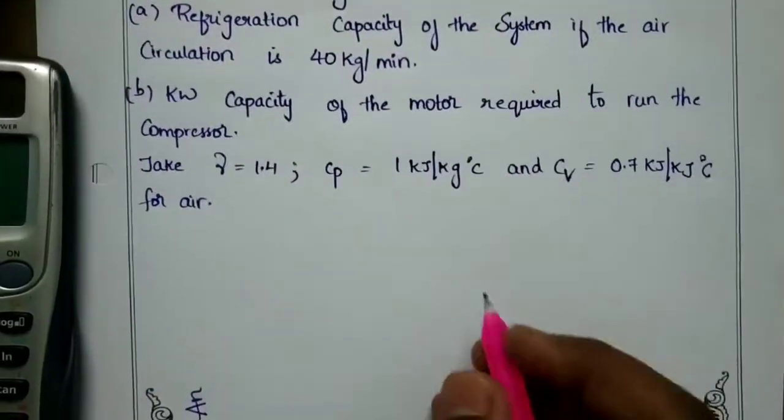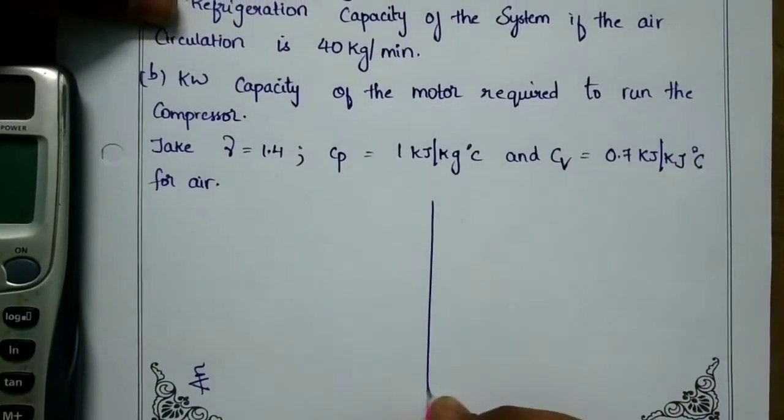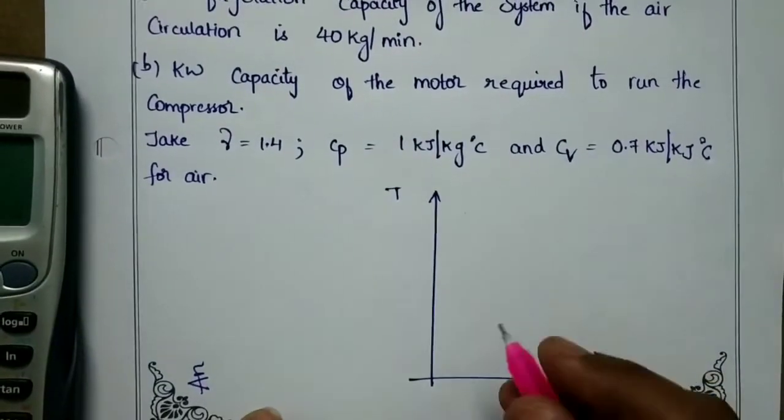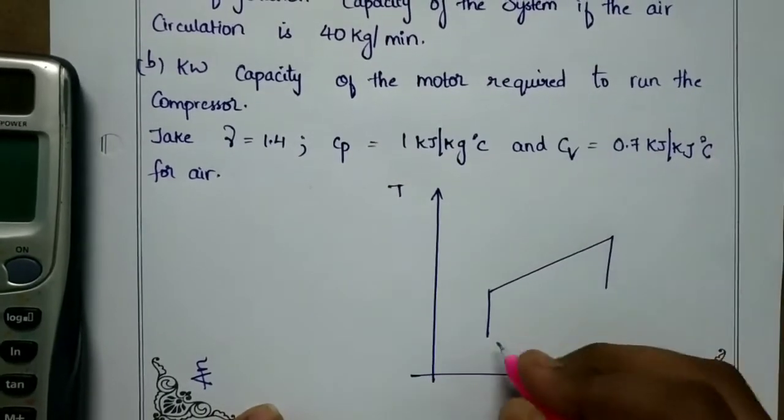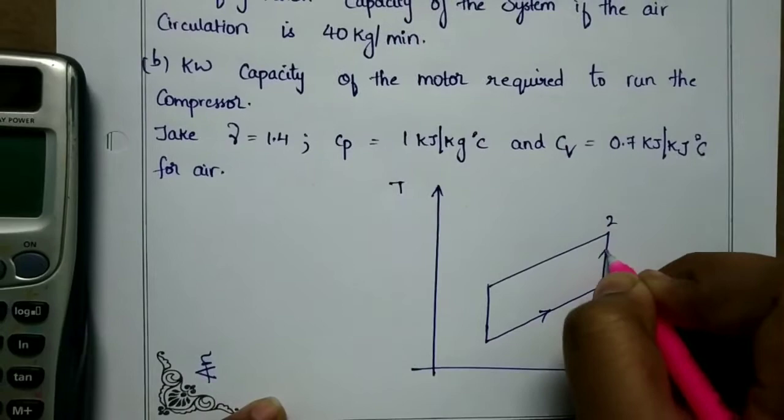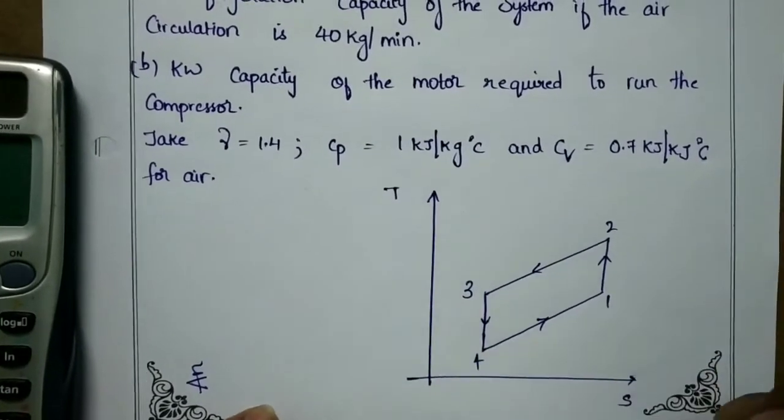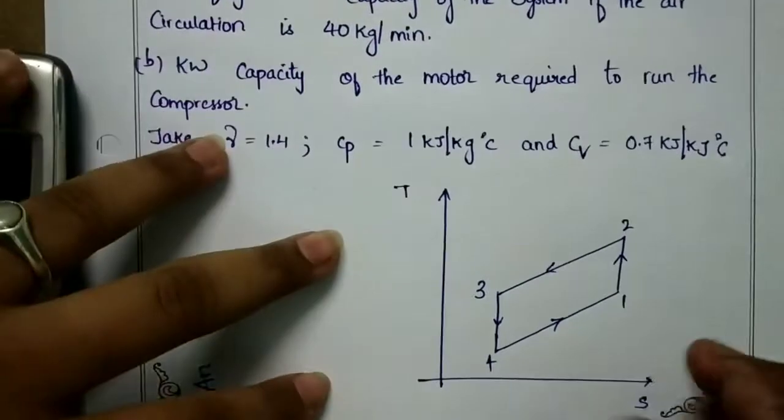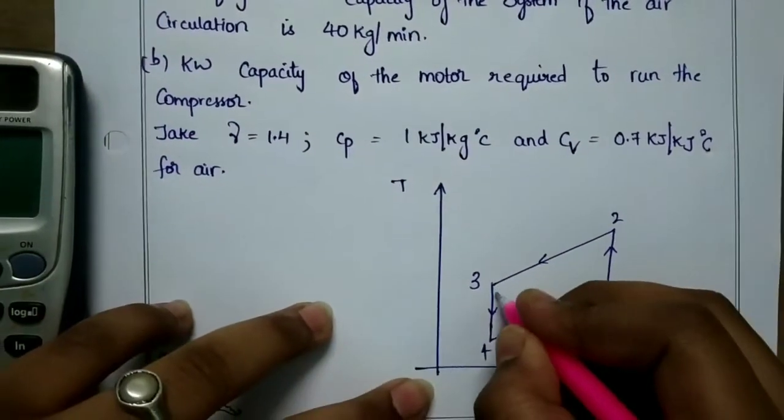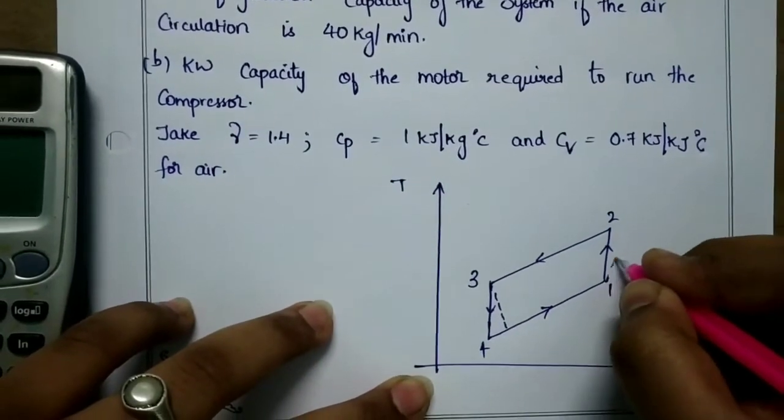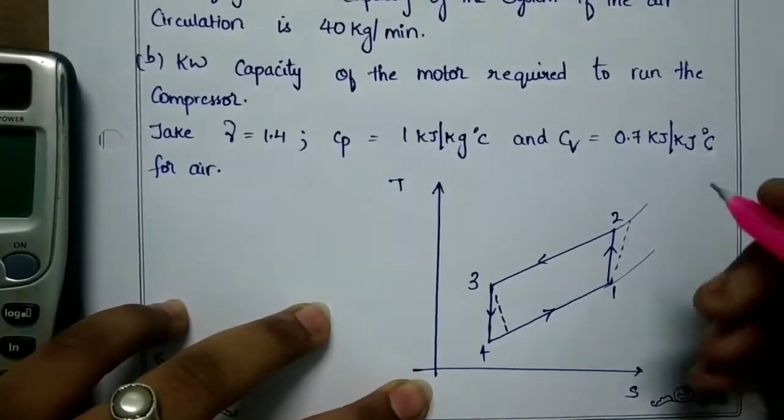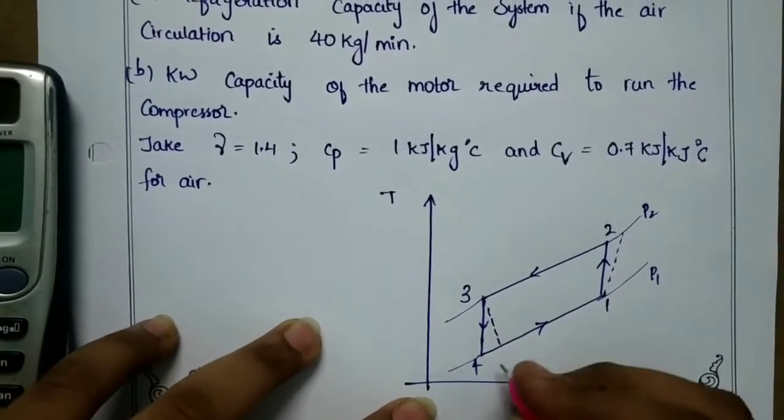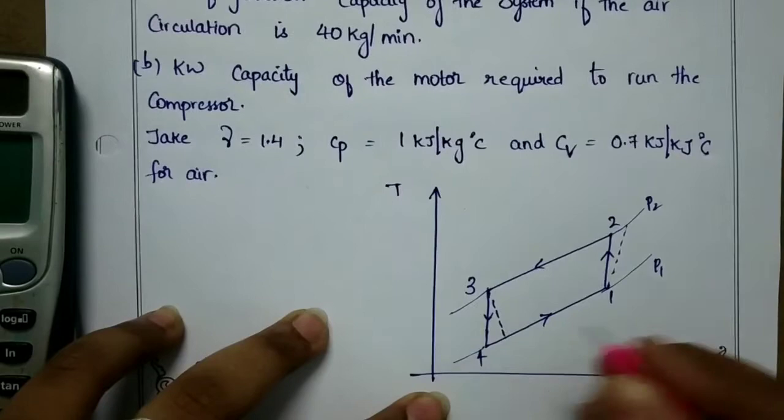So first I will draw the T-S diagram. I will find the ideal cycle T-S diagram and the actual T-S diagram. These are the pressure lines, pressure P1 and P2. I will take the same T-S diagram.